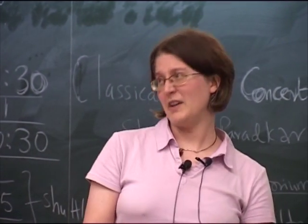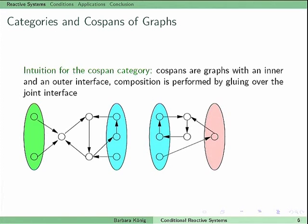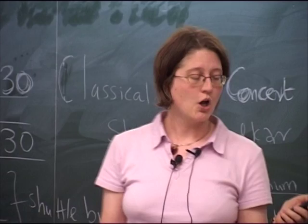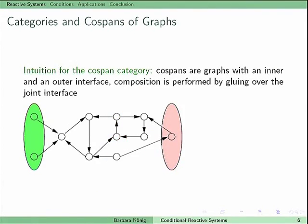Let me give a bit more intuition for the cospan category. Cospans are graphs with an inner and an outer interface. Composition, needed to have a category, is performed by gluing over the joint interface. You take these two cospans, the outer interface of one and the inner interface of the other are the same, so you glue over them and get a new cospan. This is how cospan composition works, and this is the category I will mainly work in.